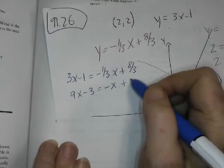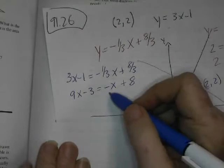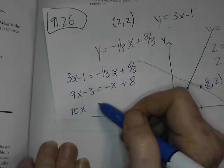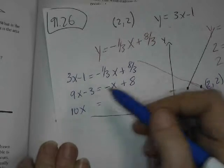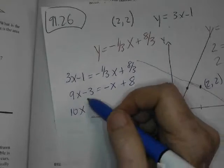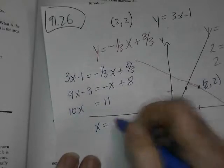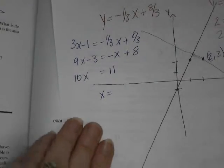This makes it easier on me. If I add x to both sides, I'll have 10x. And if I add 3 to both sides, I'll have 8, 9, 10, 11. X is 11 over 10.